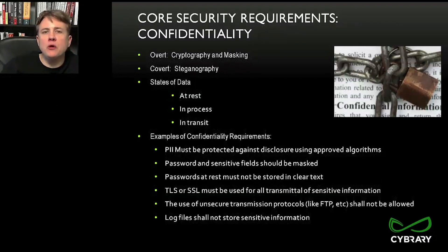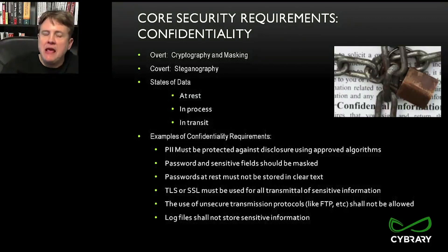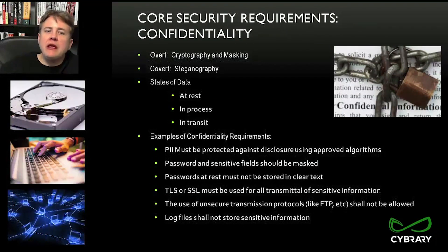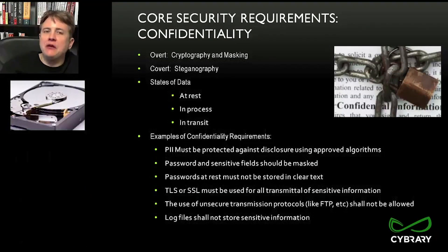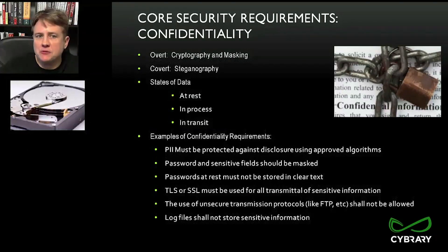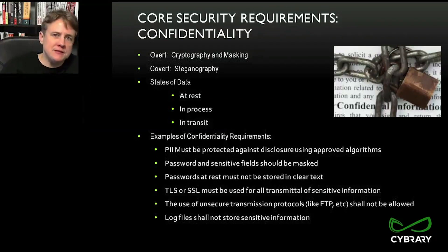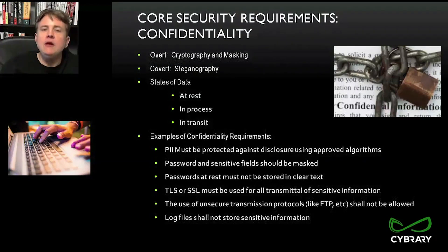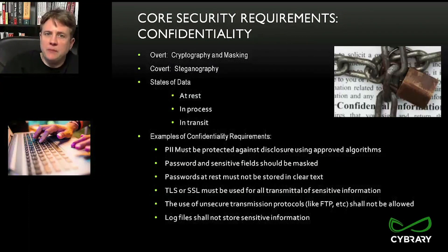When addressing confidentiality, we also need to think about the three states in which data can exist: at rest, in process, and in transit. For data at rest, we'd specify it should always be encrypted using no less than AES 256-bit encryption. When data is in process, there's not a whole lot you can do — even though data is encrypted on the hard drive, it must be decrypted to load into RAM while a representative is working with it.